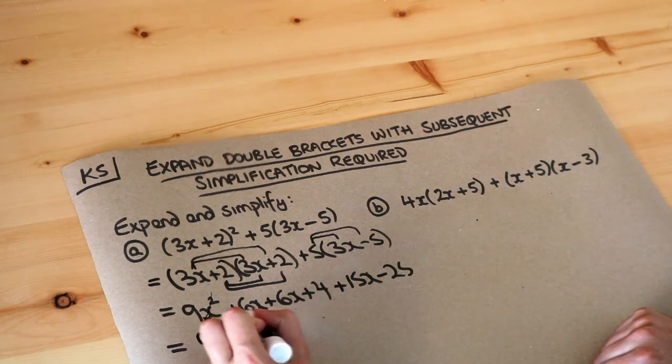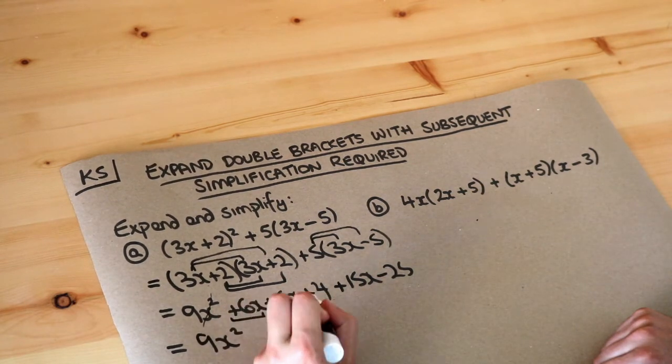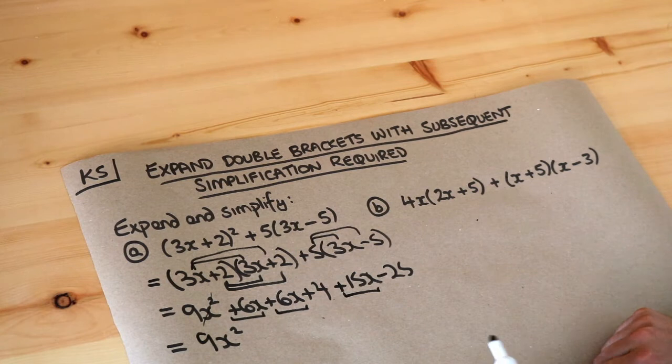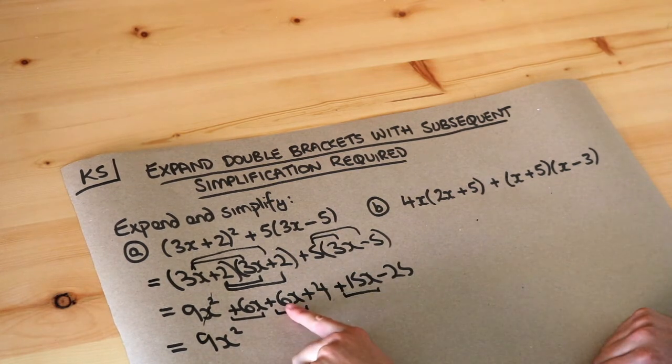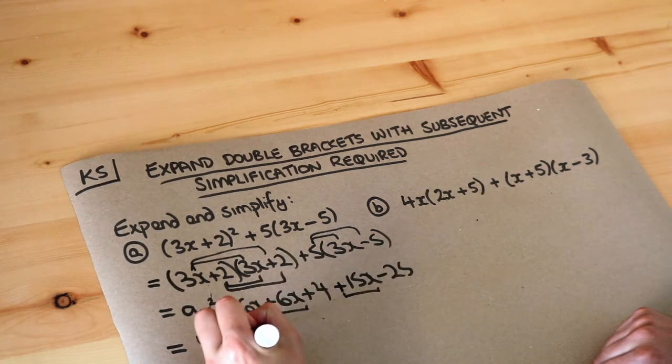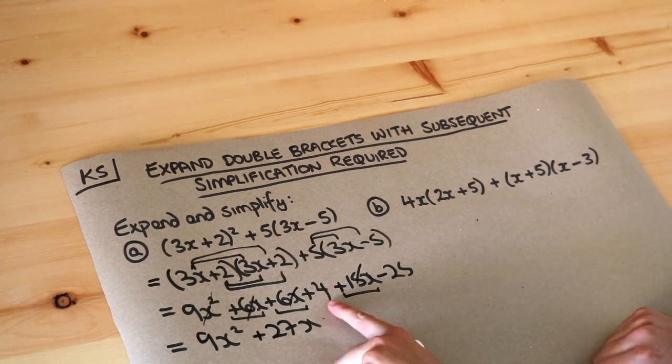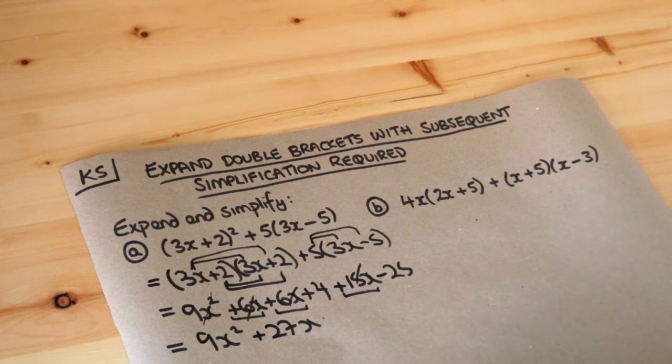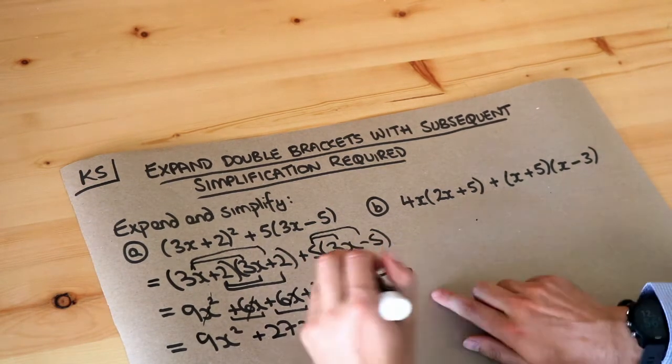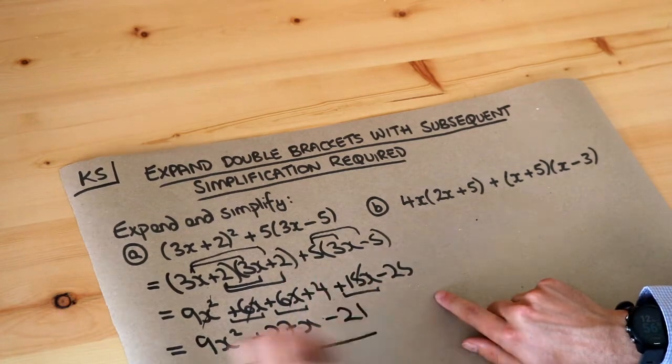Now we've got lots of x terms. We've got the 6x plus 6x plus 15x. In total that's 6 plus 6 is 12 plus 15 is 27 lots of x. Cross these out. And then finally we've got these constant terms. Constant terms are just terms which don't have a variable on them, so no letter. 4 minus 25 is minus 21. And that is the final answer.